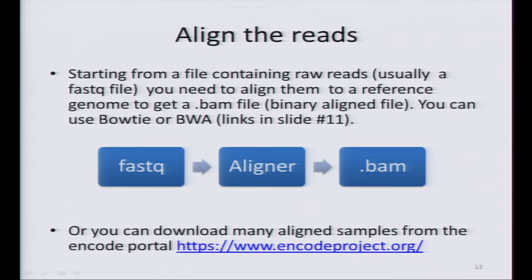For alignment, you have a FastQ file from your Illumina machine, and you use your favorite aligner such as Bowtie, BWA, or STAR to get a BAM file. Or, much easier, since we have the ENCODE portal, you can just go there and download a bunch of data and play with it.